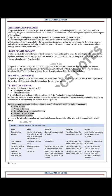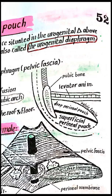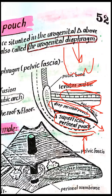For the deep perineal pouch, only the names of the structures need to be known. The layers visible in the picture are: skin, Colles' fascia, superficial perineal pouch, perineal membrane, then deep perineal pouch, endopelvic fascia, fascia covering the pelvic floor, and the peritoneum. The deep perineal pouch is bounded superiorly by the superficial fascia over the pelvic floor and inferiorly by the perineal membrane.